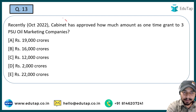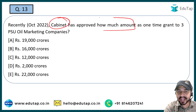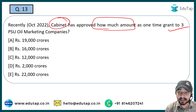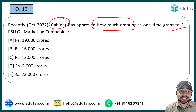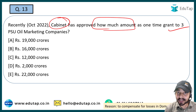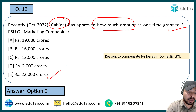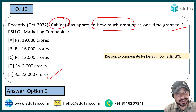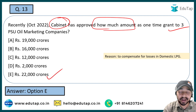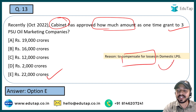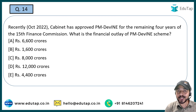The next question: the cabinet has approved how much amount as a one-time grant to three PSU oil marketing companies? The right answer is ₹22,000 crores. The reason behind this grant is to compensate for the losses in the domestic LPG segment.